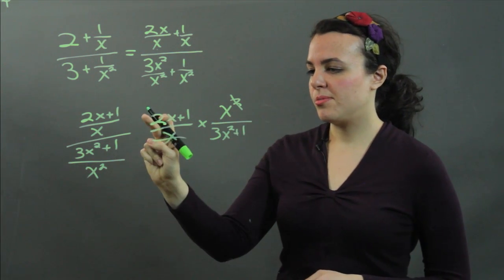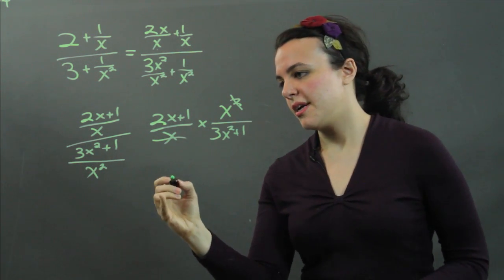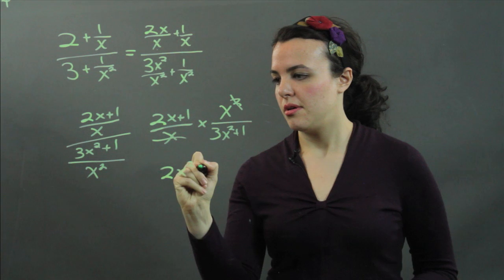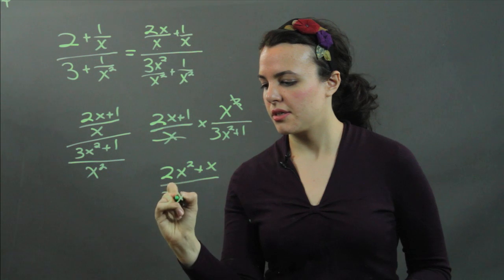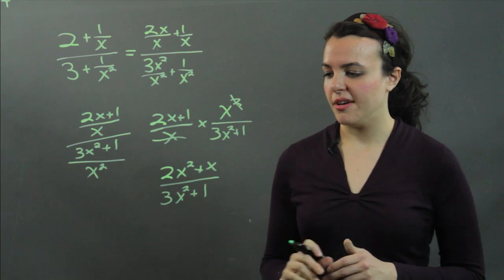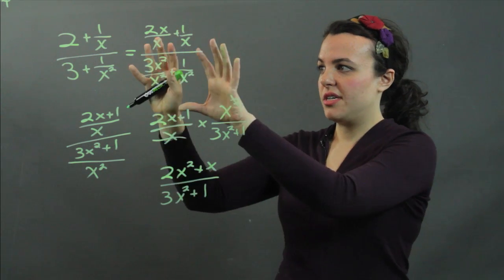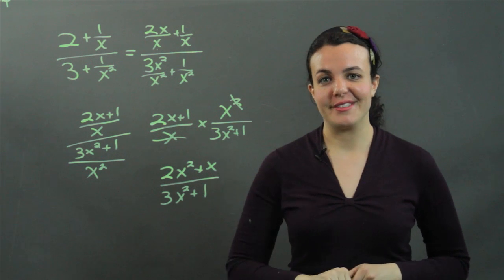We multiply the numerators and denominators to get (2x² + x)/(3x² + 1). And there you have it. We've simplified our giant complex fraction. I'm Julia, thank you.